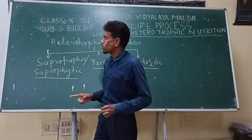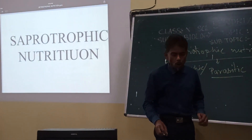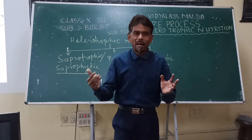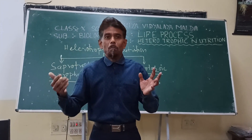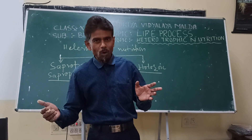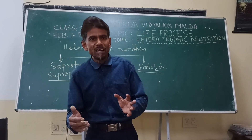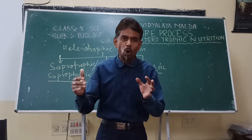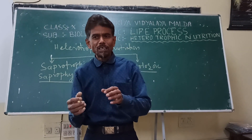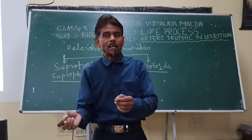First, let us concentrate on saprotrophic nutrition. What are saprotrophs? Can you give me an example? Yes — fungi, mushroom, bread mold — these are examples of saprotrophs. They are those who live on dead and decomposed organic matter, and their mode of nutrition does not take place within their body, but rather outside the body.